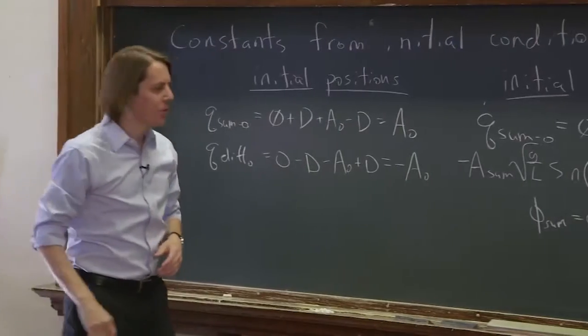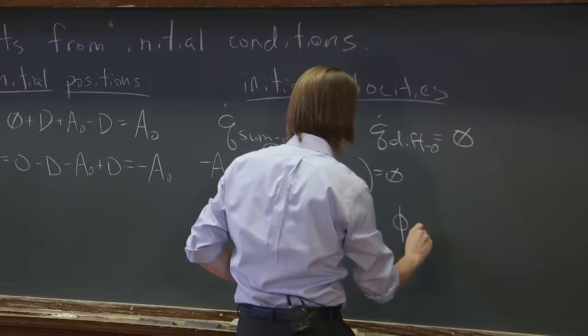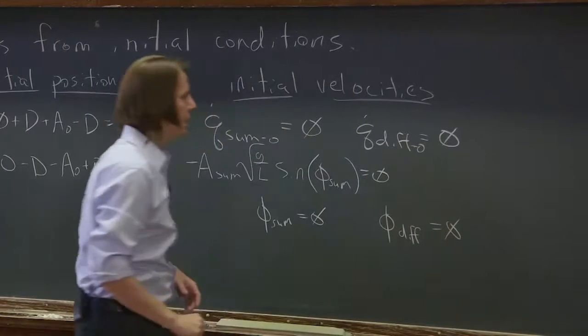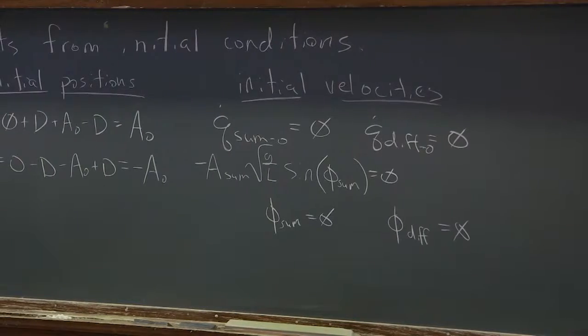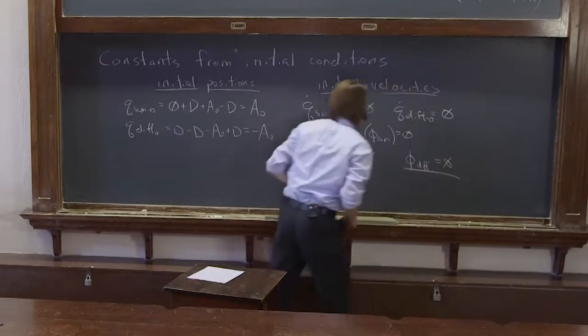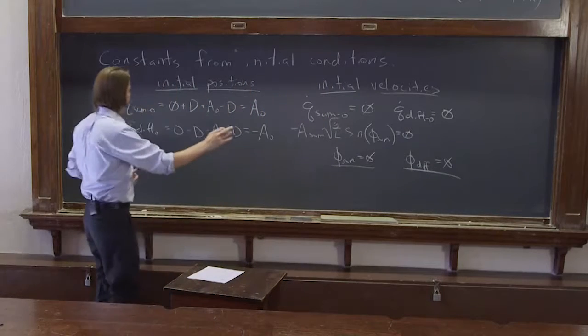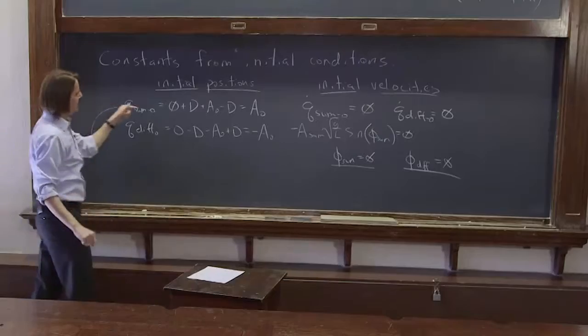To save chalk and space, you could do the exact same argument to show that this phase is also 0. Just take the derivative of the difference normal coordinate, and you'll find both phases are 0. Now let's use this initial condition.